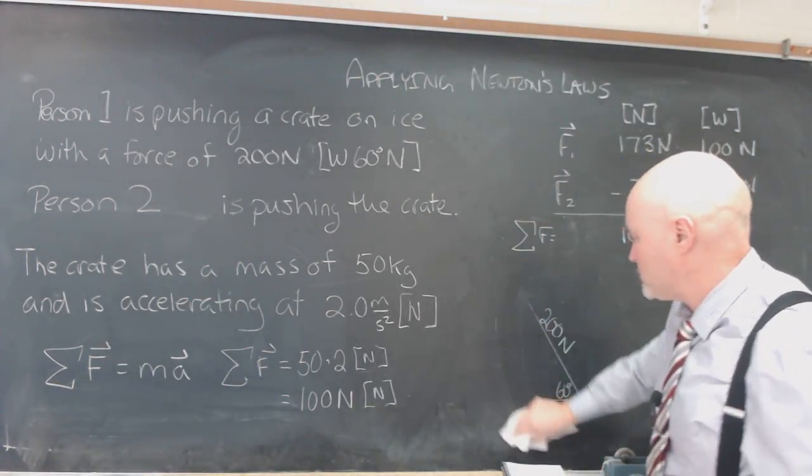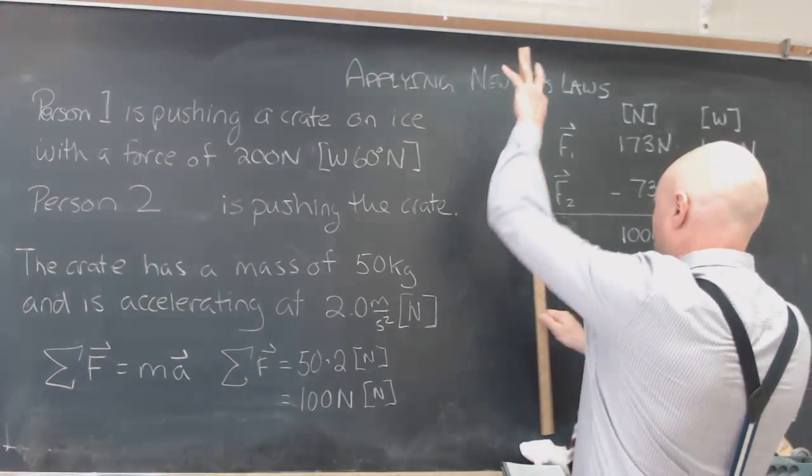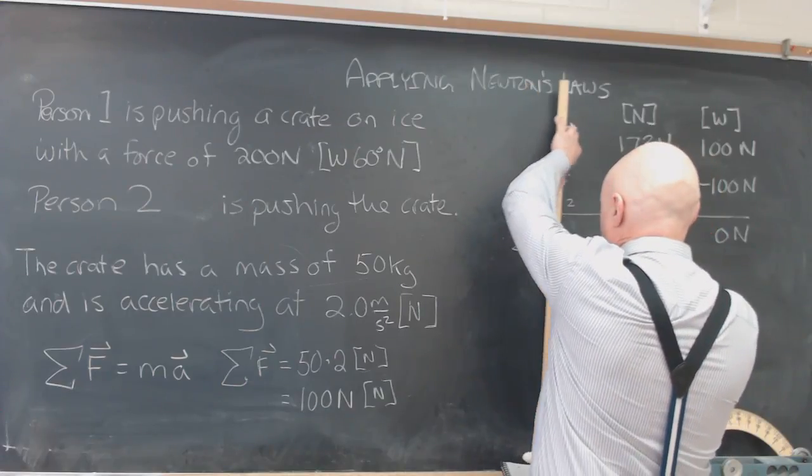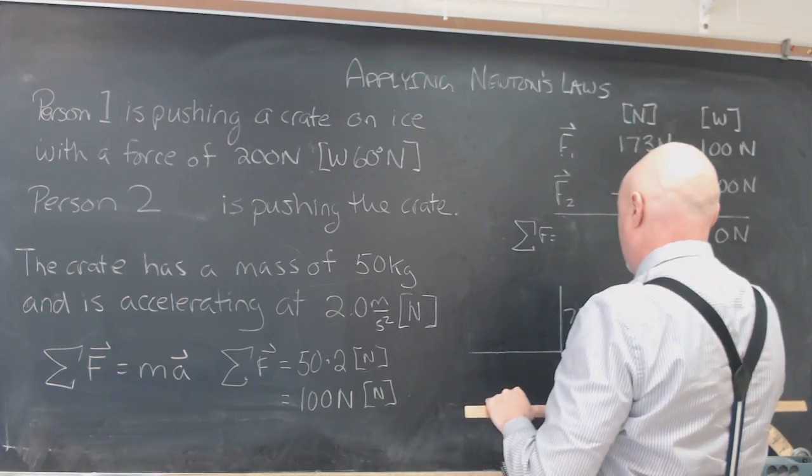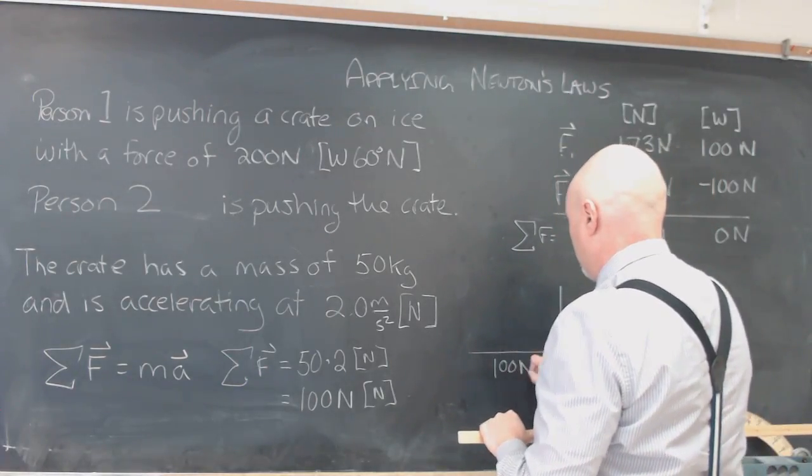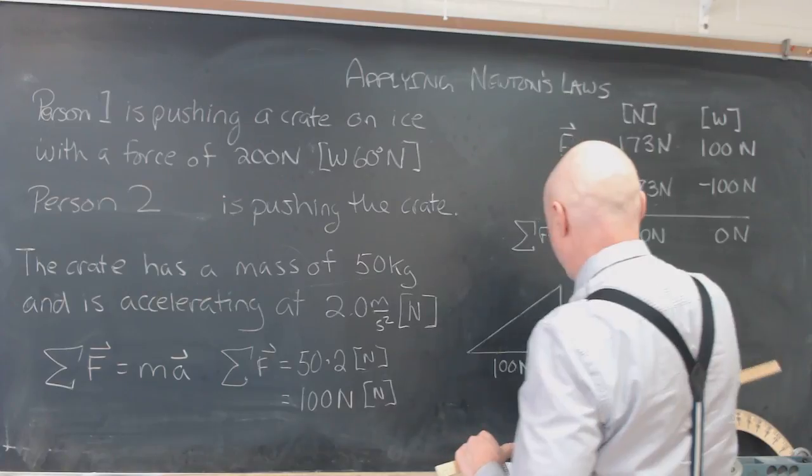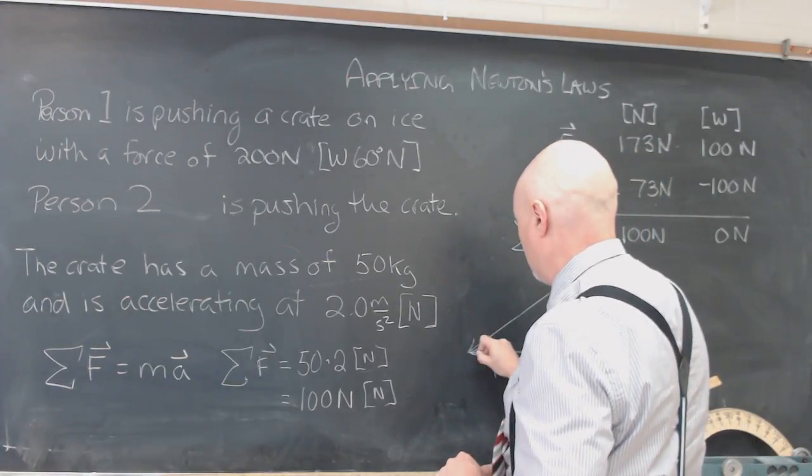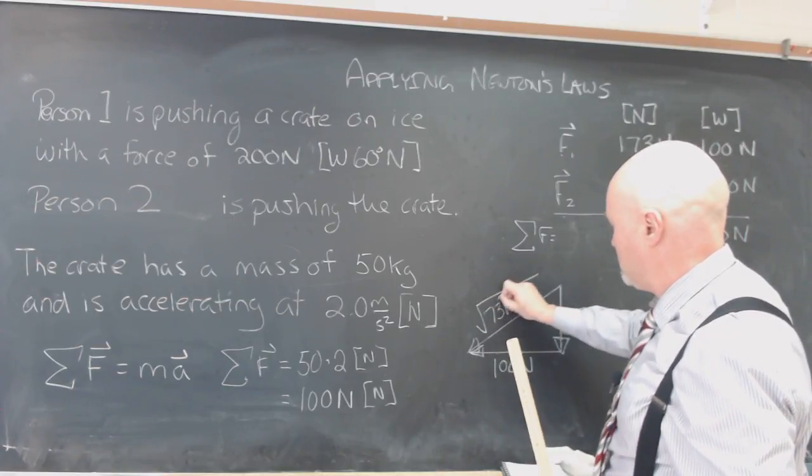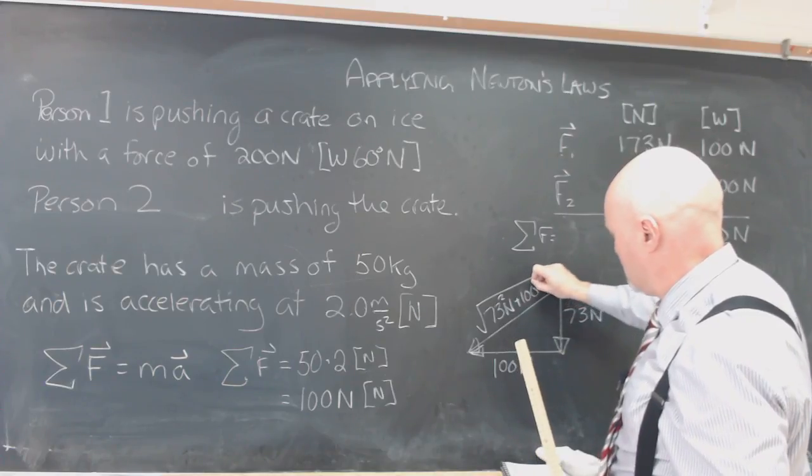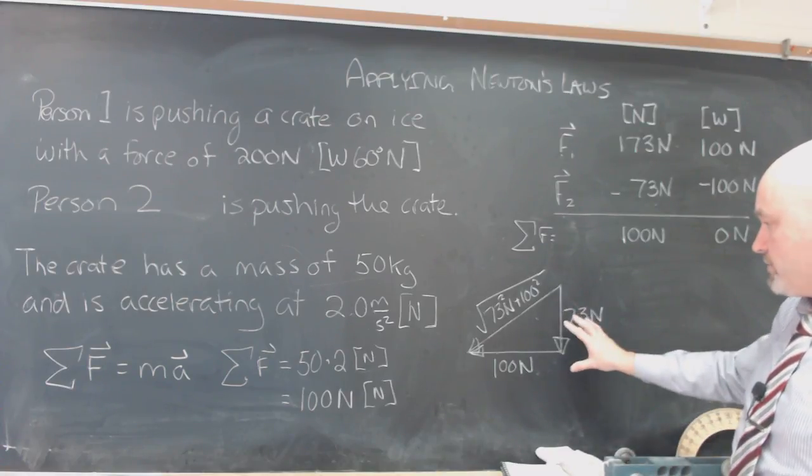Now it's just a matter of reconstructing the triangle to find out what the magnitude of the force is and the direction. And so this is going to be 73 south and it's going to be 100 to the west. And look at this, this person is in a very contrary manner pushing almost opposite the other person. I can use my Pythagorean theorem to figure out the magnitude. Obviously I can use an inverse trig function to figure out the direction.